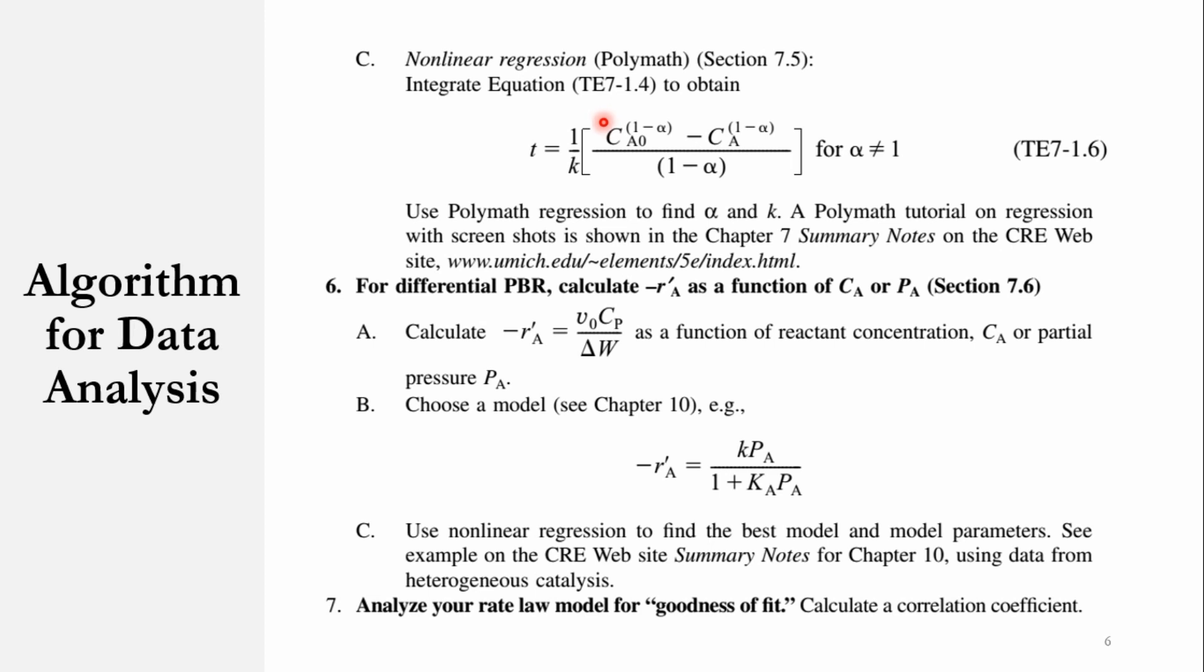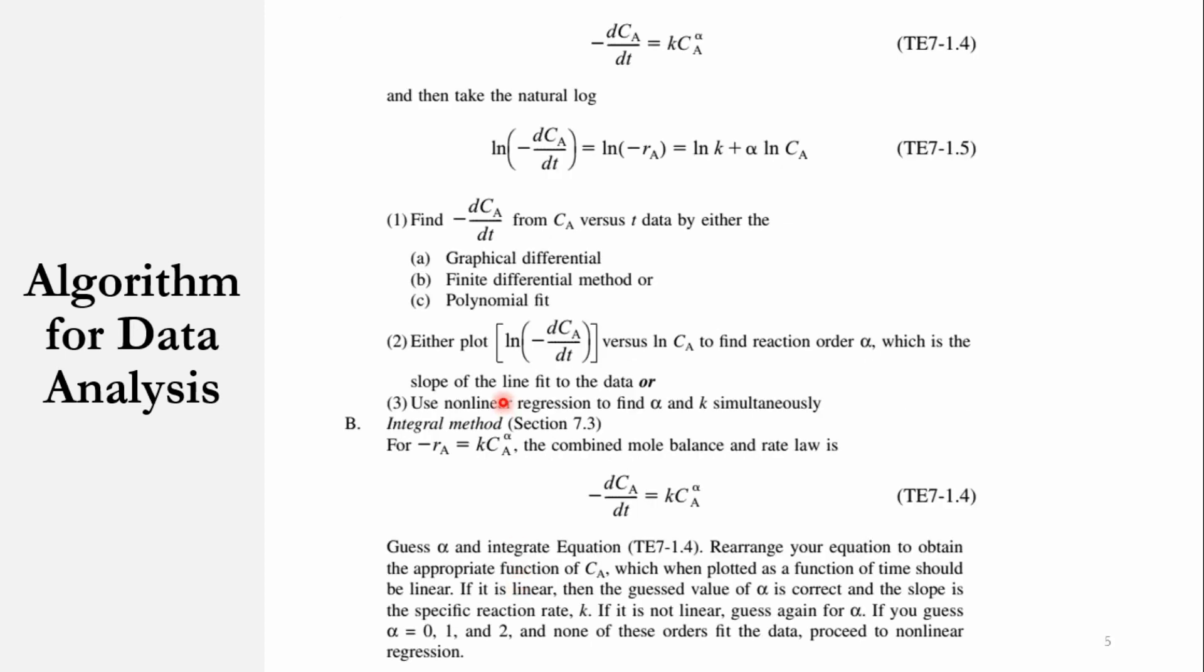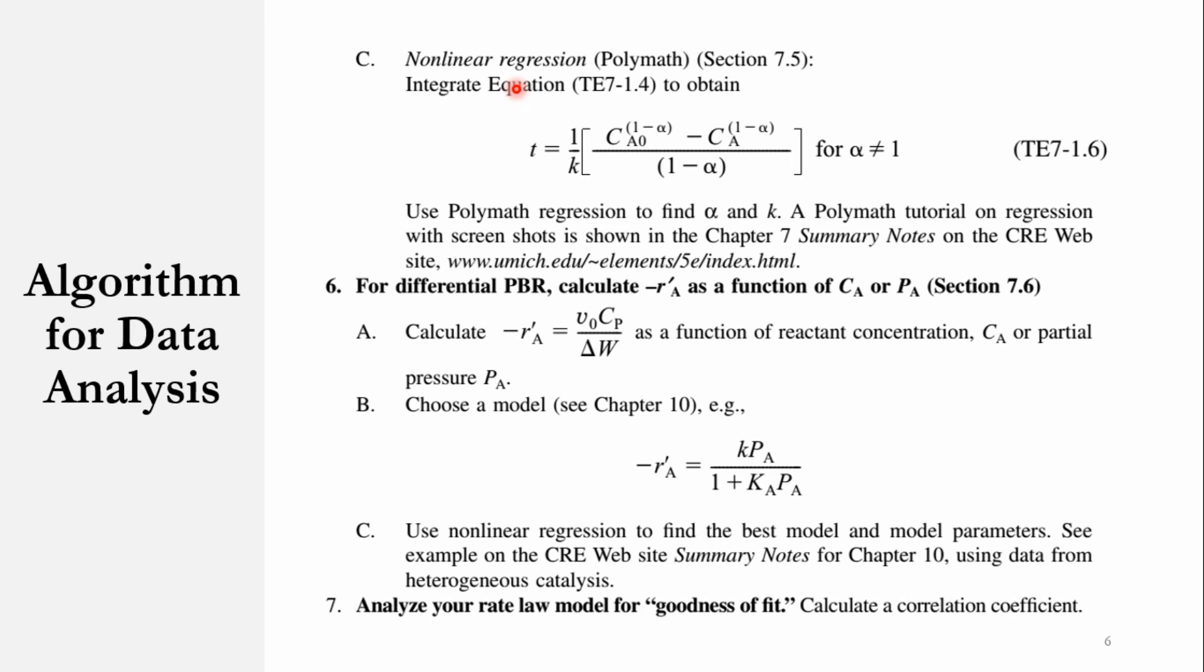And in nonlinear regression, you can see you have to use Polymath to solve it. So we will do it in our upcoming lectures. Once we will determine the order of the reaction, that is for the batch system. If I take you back, we have said that for a batch reactor, calculate -rA as a function of concentration, in which there are three methods: differential, integral, and nonlinear regression by Polymath.